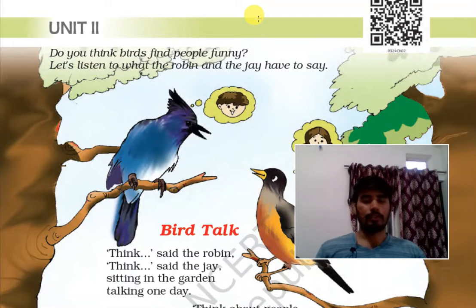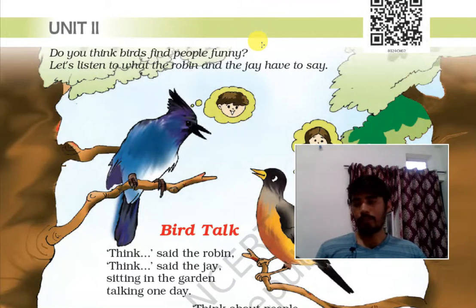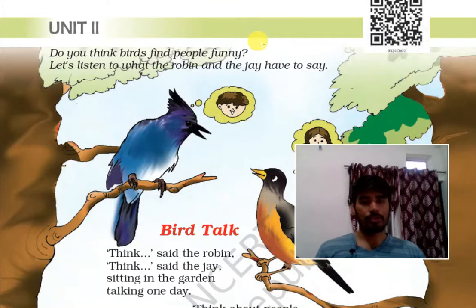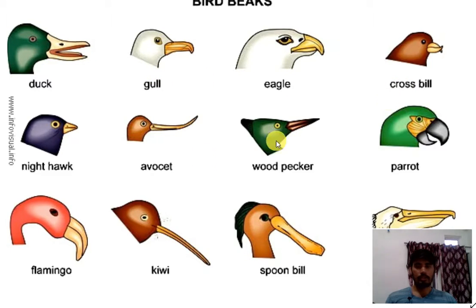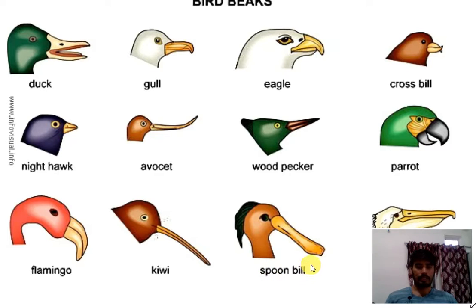Before starting this chapter I want to discuss some words, because every bird has a different shape, size, colors, and different sounds. You can see in this picture: this is duck, duck beak, gull, eagle, crossbill, nighthawk, avocet, woodpecker, parrot, flamingo, kiwi, spoonbill — like that, shaped like a spoon.